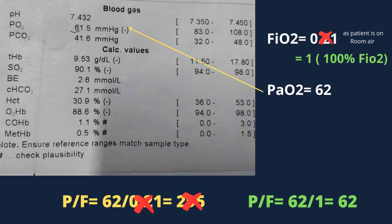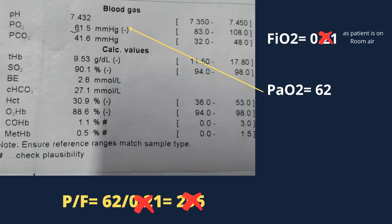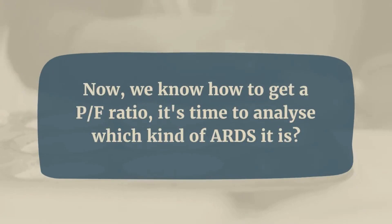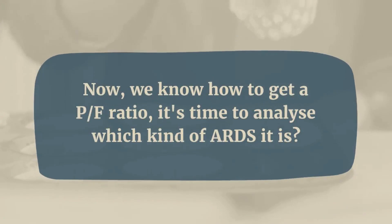In the same case, if we are delivering 100% FiO2 and the patient is on mechanical ventilation, the decimal FiO2 is 1. The P/F ratio will be 62, which is the PaO2 value itself from this ABG. Now we know how to calculate a P/F ratio — it's time to analyze which kind of ARDS it is.